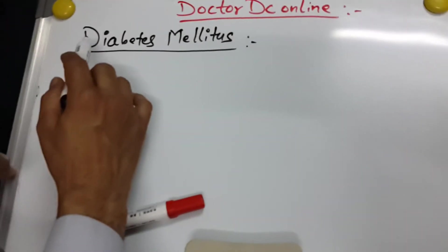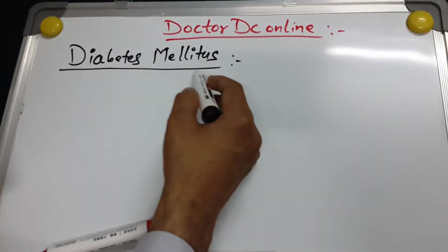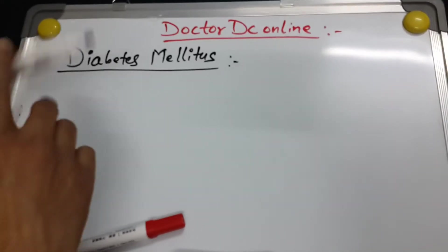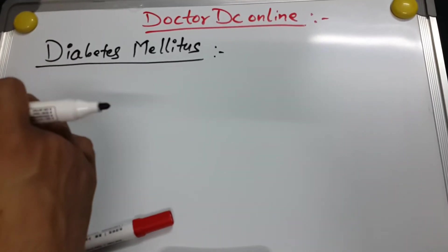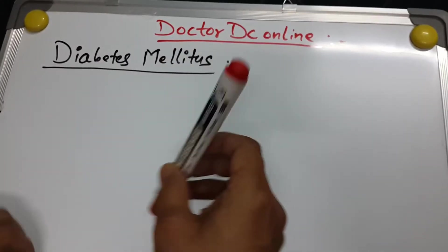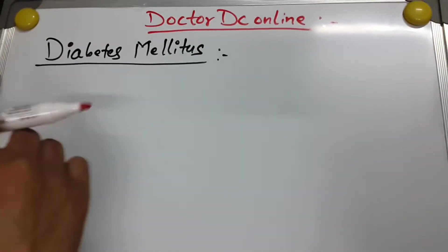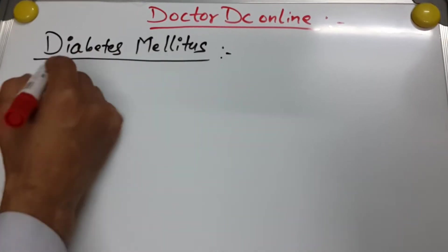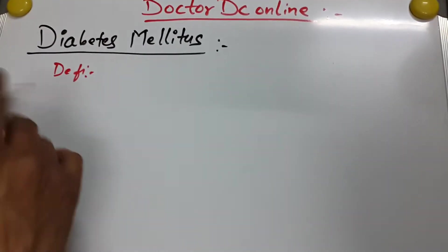Today the topic is diabetes mellitus — the most common disease, and both easy and difficult to understand. I will go step by step, starting with definitions: what is diabetes mellitus?